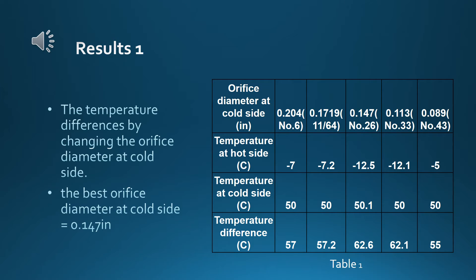Table 1 shows the results of temperature differences by changing the orifice diameter at the cold side. At the end of the cold side of the vortex tube, a plastic seat with a small hole was set to prevent hot air from coming out to the cold side.